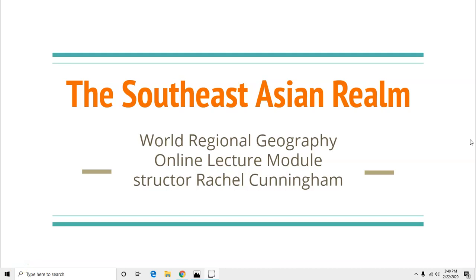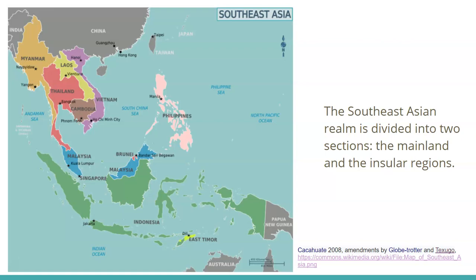Hello, and today we're going to be talking about the Southeast Asian realm, continuing on with our lectures of parts of Asia. The Southeast Asian realm is divided into two sections: the mainland section and the insular regions. Insular refers to islands, and very much of this realm consists of lots of islands. We're going to divide the realm into those two pieces as we talk more about individual countries.